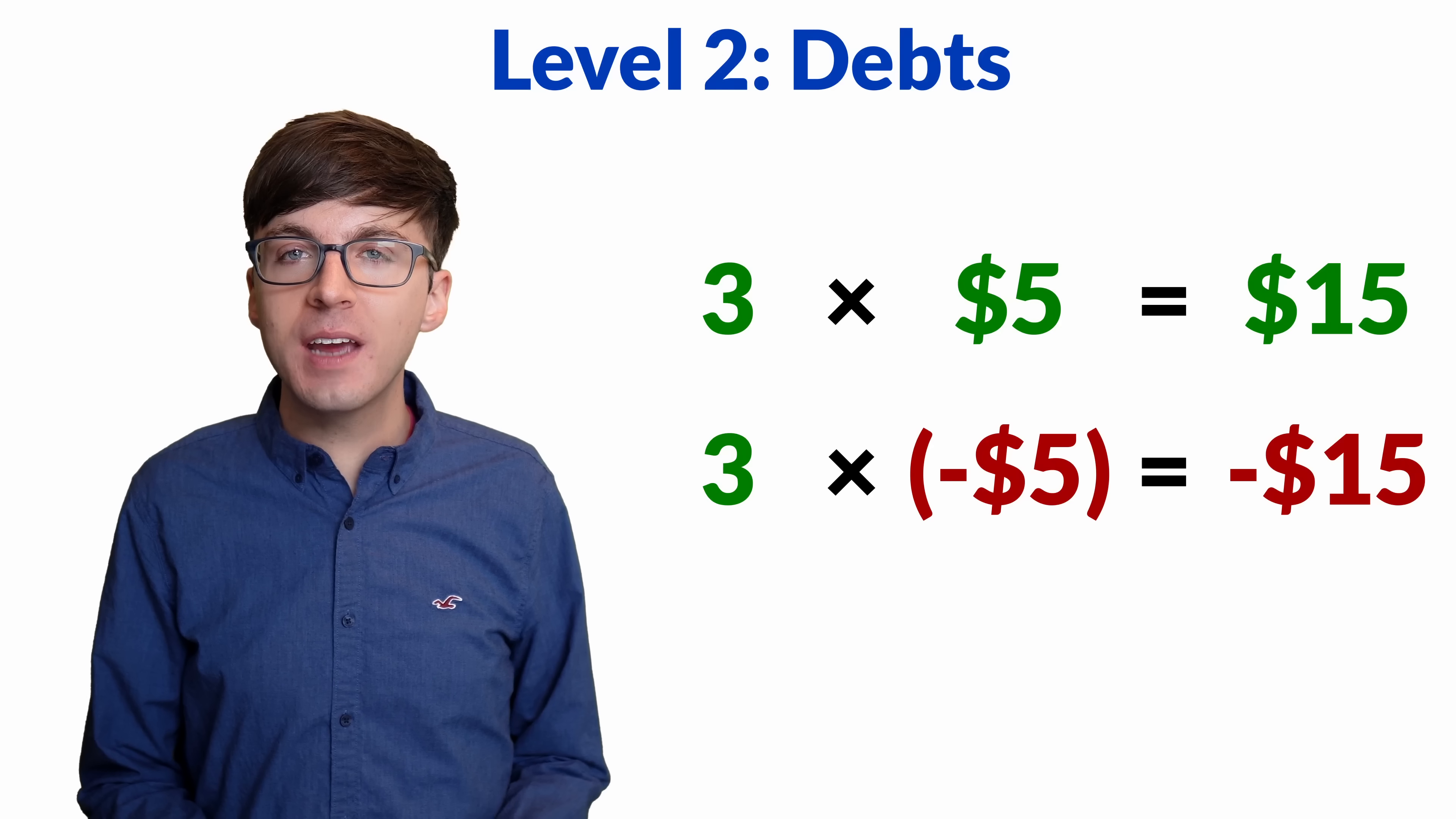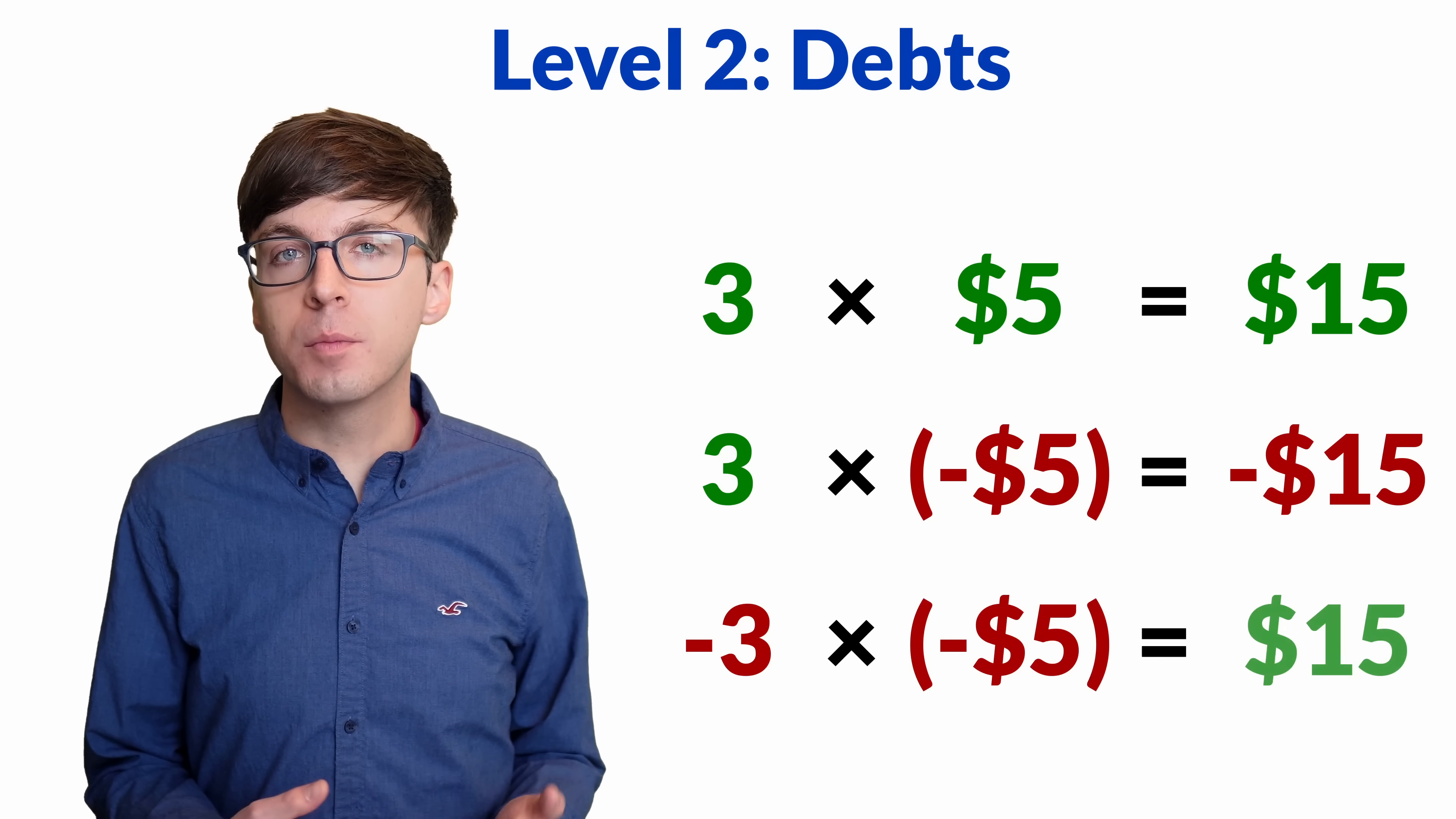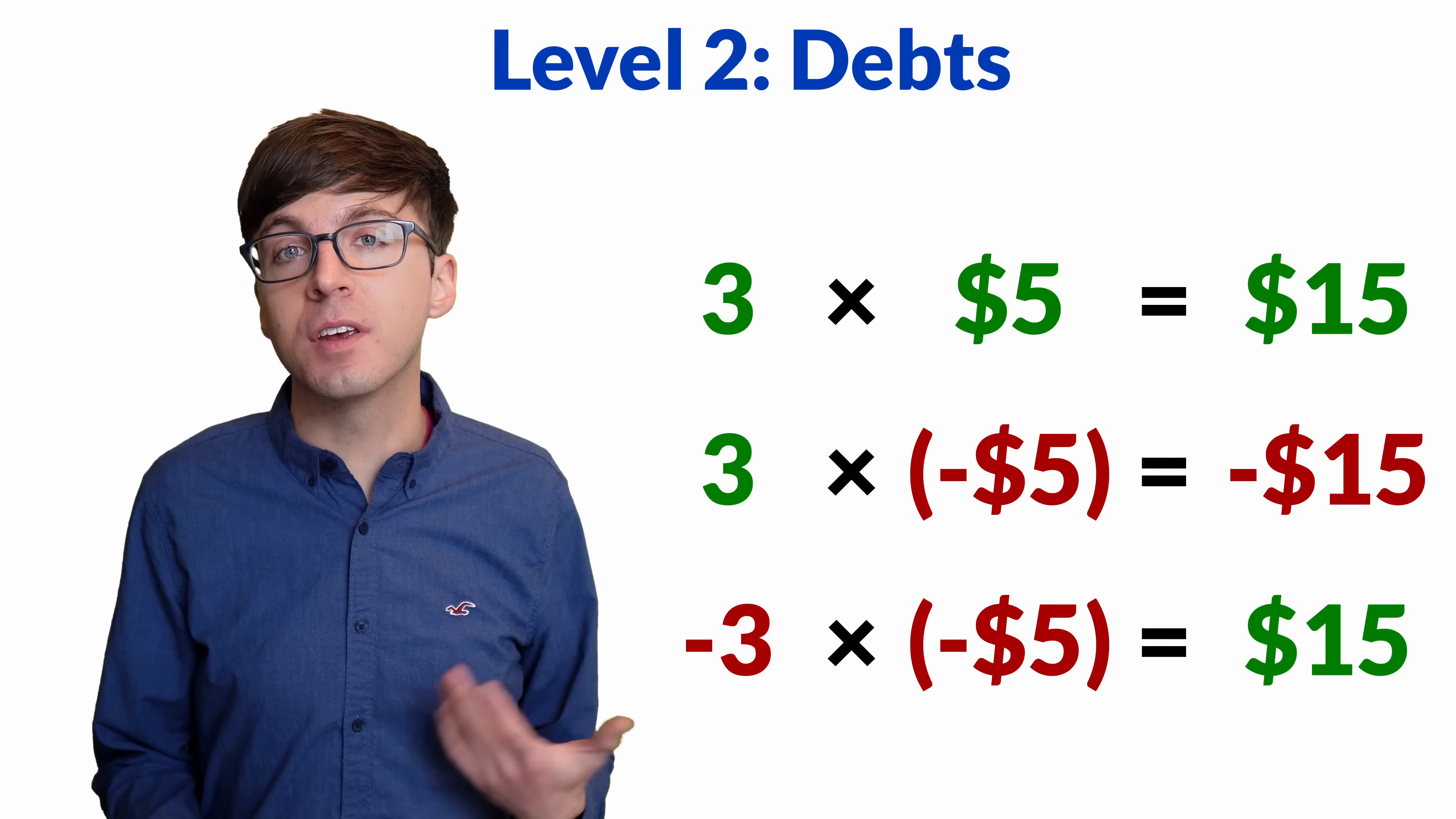But now what happens if your friend takes away three of your debts of $5 each? That's negative 3 times negative 5, which is positive because your debts have been removed. So negative 3 times negative 5 is positive 15. Again, we have an intuitive argument for why negative times negative is positive.